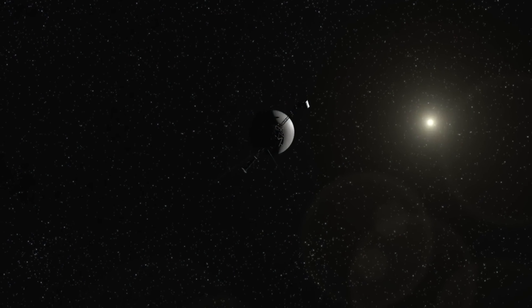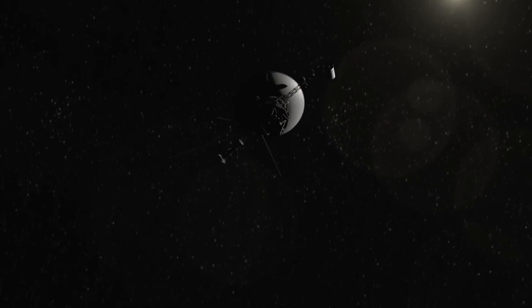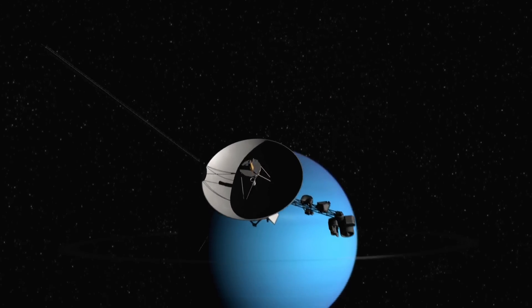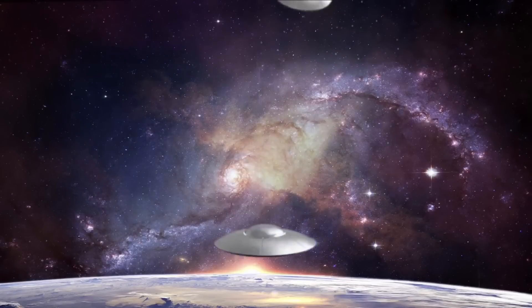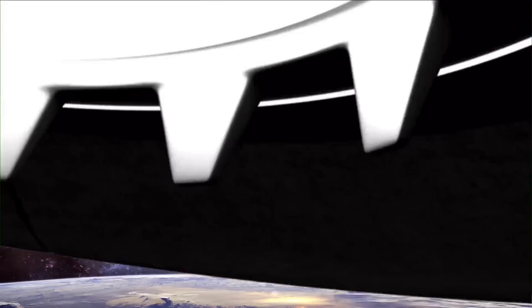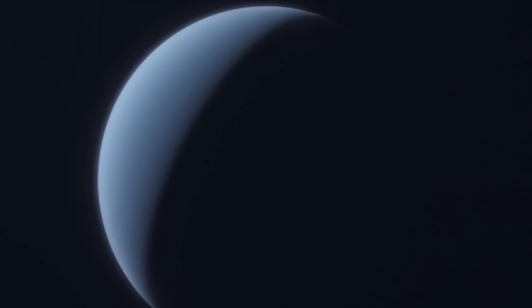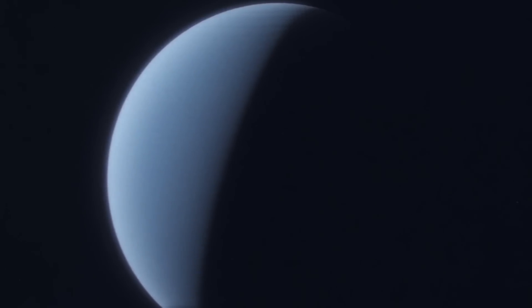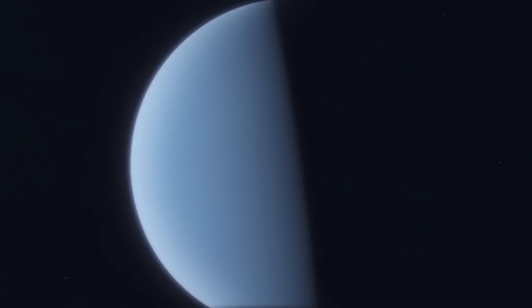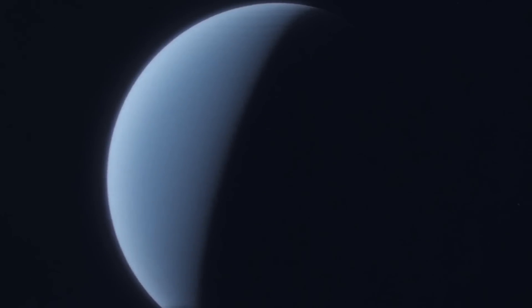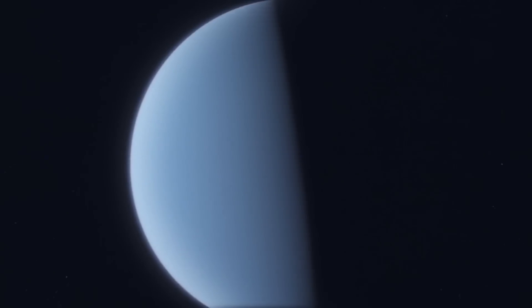One of the most iconic aspects of the Voyager mission is the Golden Record, a 12-inch gold-plated copper disc that was attached to both Voyager 1 and Voyager 2. The Golden Record contains sounds and images selected to portray the diversity of life and culture on Earth, intended as a message to any extraterrestrial intelligence that might encounter the spacecraft in the distant future. The inclusion of the Golden Record reflects the optimism and vision of the Voyager mission, a belief that humanity's reach should extend beyond our own planet and that our exploration of space is a journey of discovery, not just for ourselves, but for all intelligent beings.